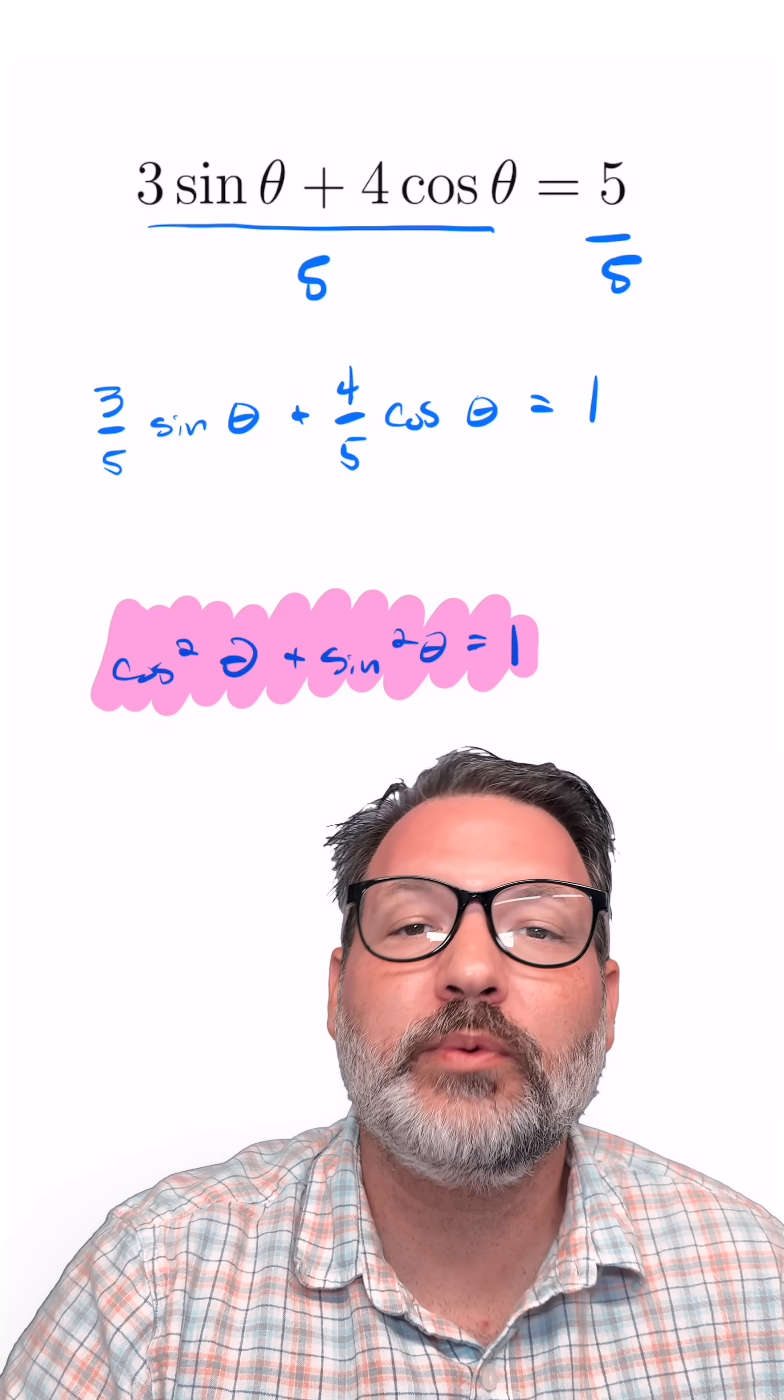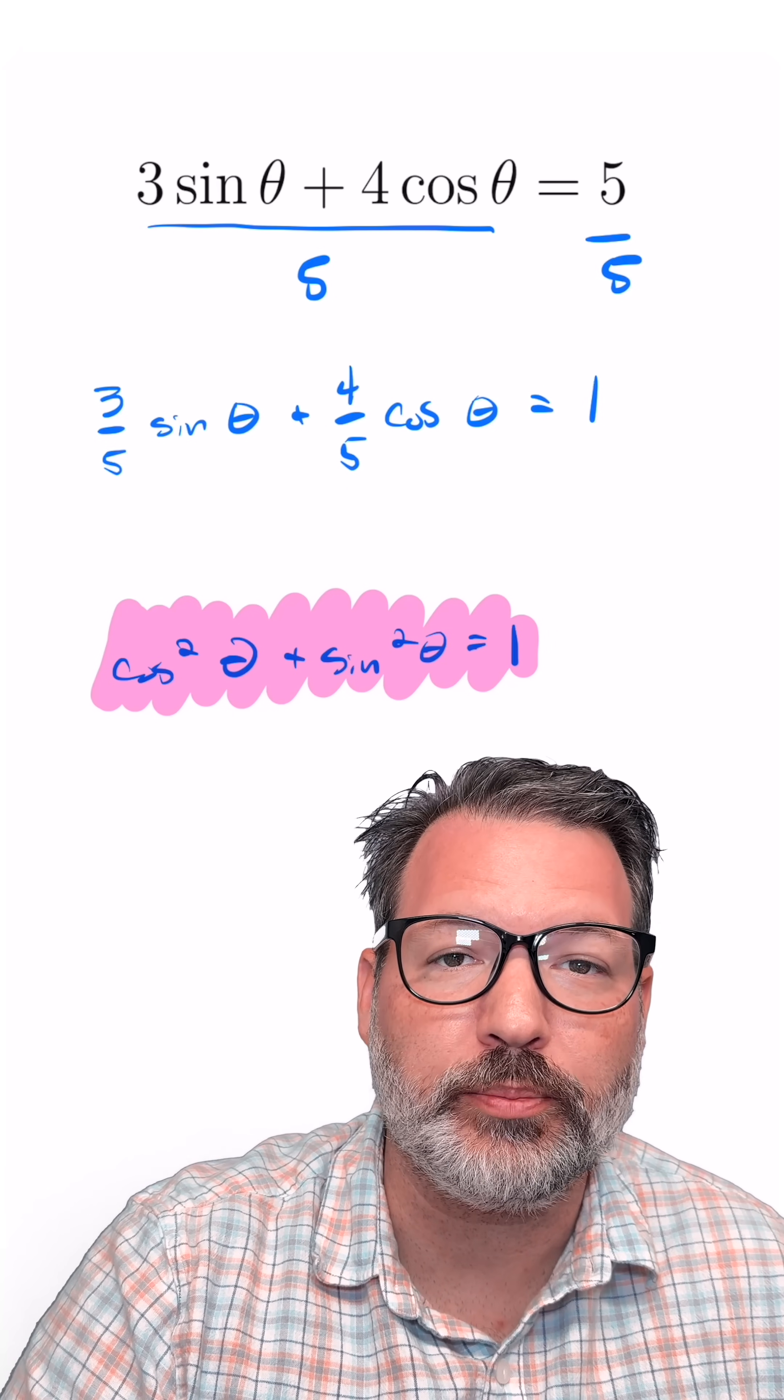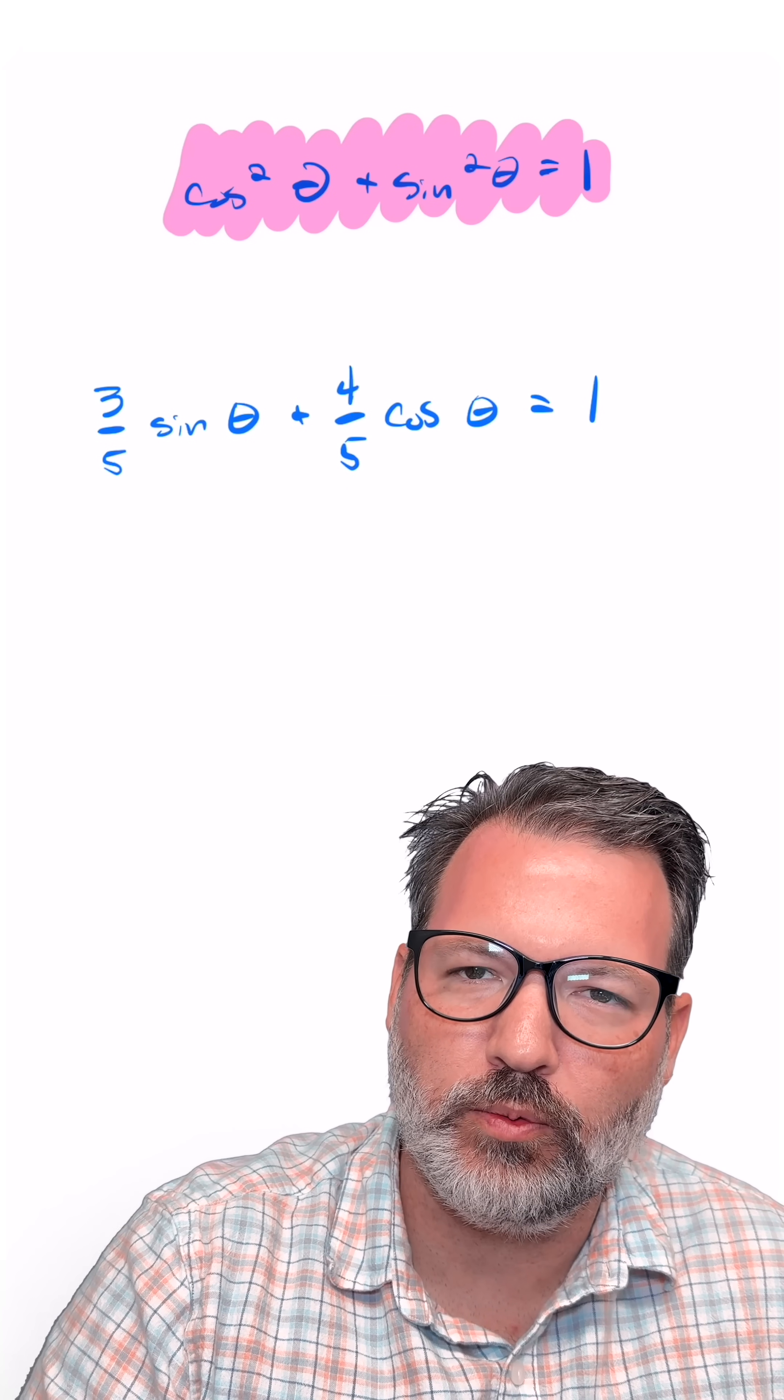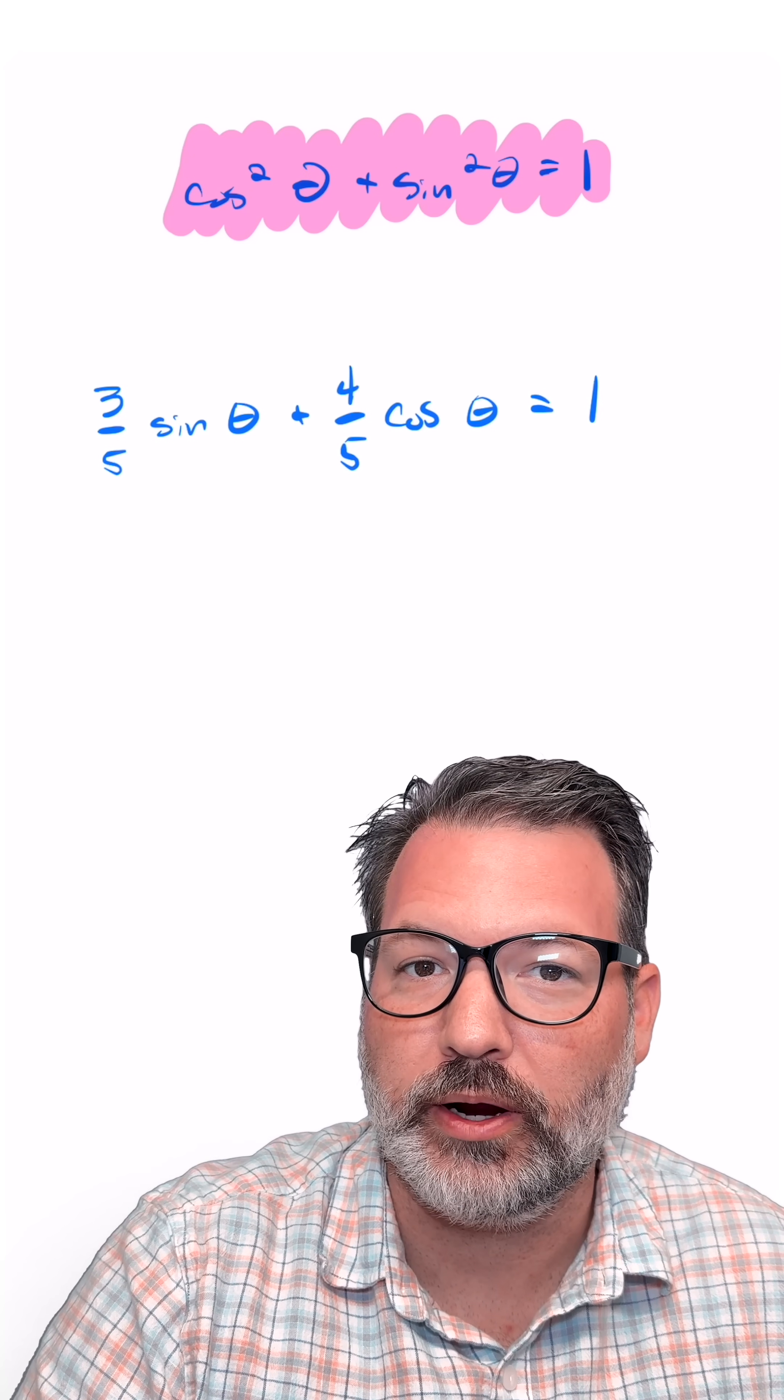So now that we've got the 1, how do we take care of the sine squared and cosine squared parts? Squaring just means multiplying something by itself. So what we need to get a sine squared or a cosine squared is